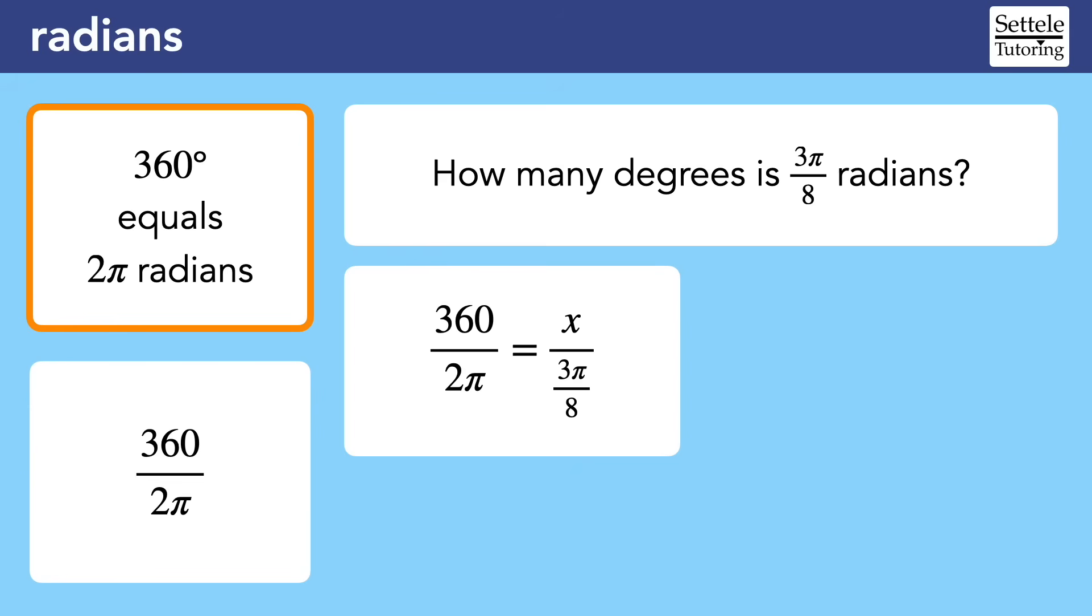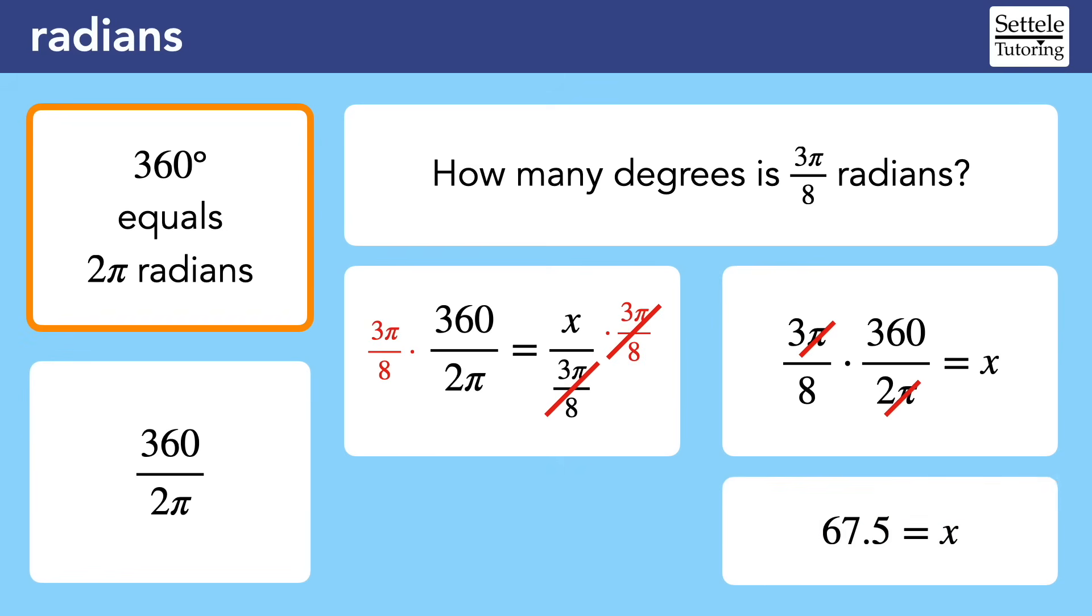To isolate x, we can multiply by the denominator. It happens to be a fraction, but don't let that bother you. If the bottom were 7, you'd multiply the top by 7 to cancel it out. We're doing the exact same thing. But we also have to multiply on the other side for balance. When we do that, the π's will cancel out, which is good because degree measurements don't usually include π. Simplify the fractions to find that 3π over 8 radians is equivalent to 67.5 degrees.